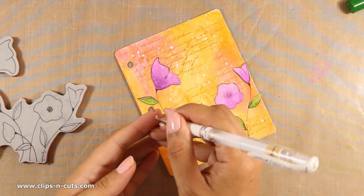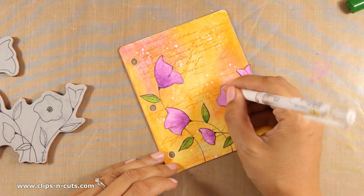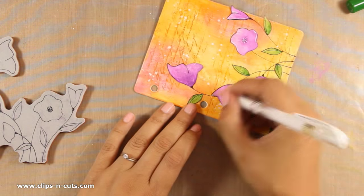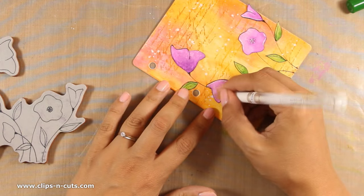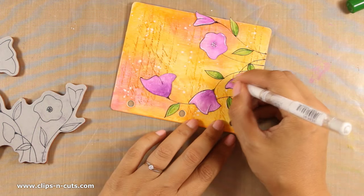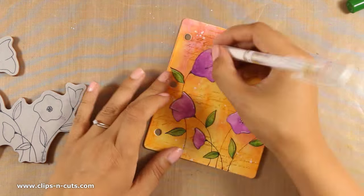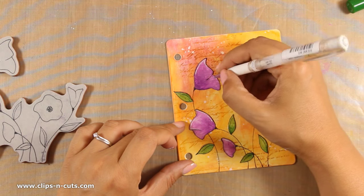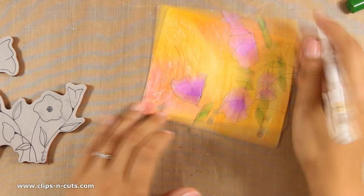Now with my white gel pen, I'm going to add a few more details. White highlights are something that I love doing on almost every art journal that I make. I think that they help my images pop against the background.